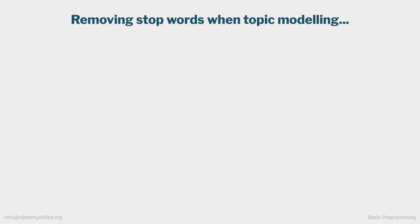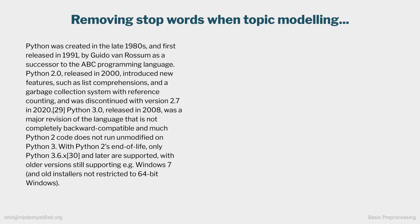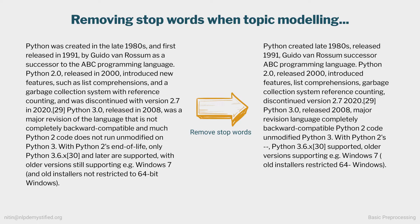Like case folding, it depends. Let's say we want to do some topic modeling — automatically discovering different topics present in a corpus. Consider this block of text: Python was created in the late 1980s and first released in 1991 by Guido van Rossum. If we run stopword removal on this block, even after removing the stopwords, it's easy to tell this is something related to Python and specifically its history. So when stopwords play little to no role and you're memory and time constrained, removing stopwords can be handy.